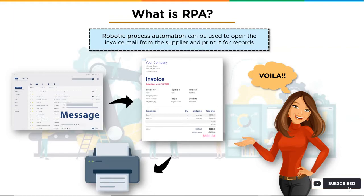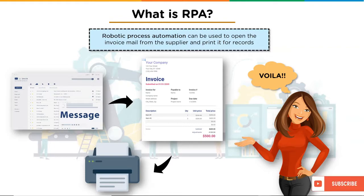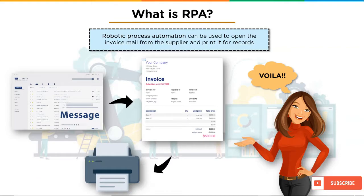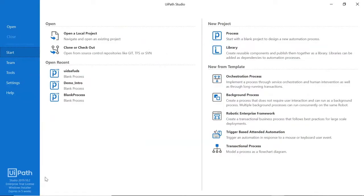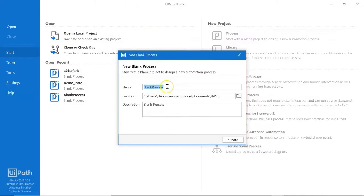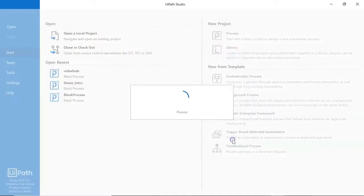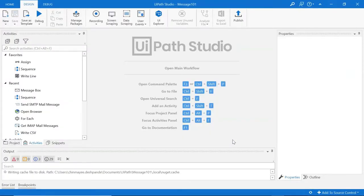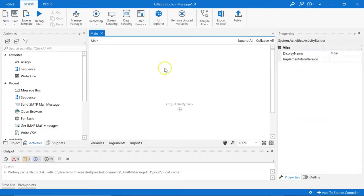Consider needing to display a welcome message on a regular basis. Instead of manually typing it every time, you want to automate it. For this we use an RPA tool called UiPath. UiPath Studio is used to develop RPA bots for specific functions. Let me navigate to UiPath Studio and create a new project — I'll call it 'message 101' and hit create.